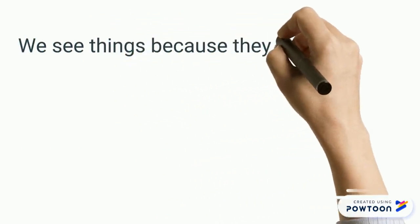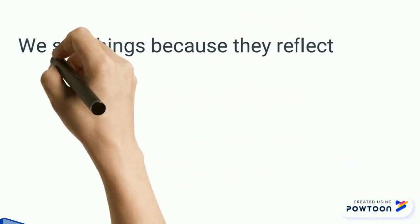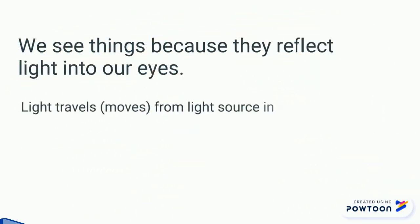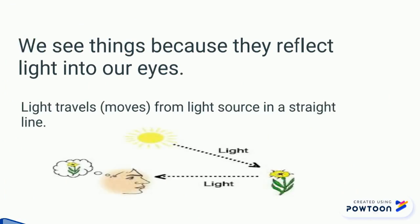We see things because they reflect the light into our eyes. Light travels from the light source in a straight line to hit the object, and it bounces back to your eye so you can see the thing or the object. This is how we see things.